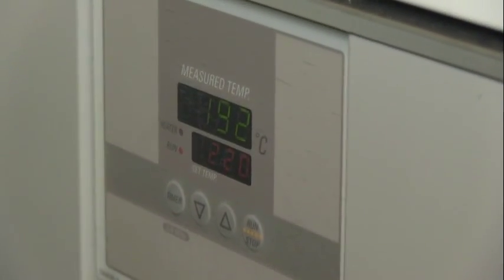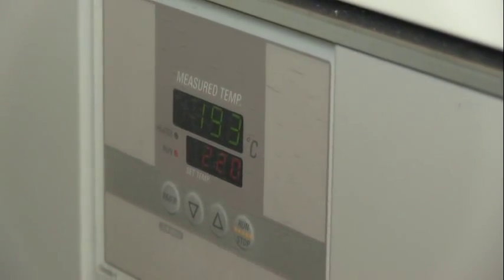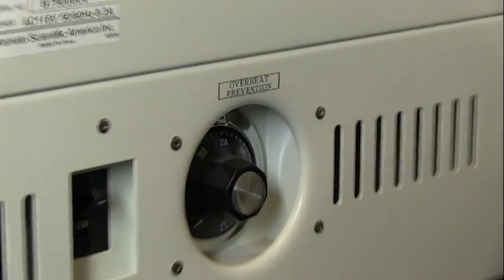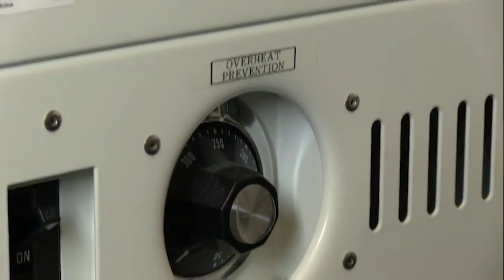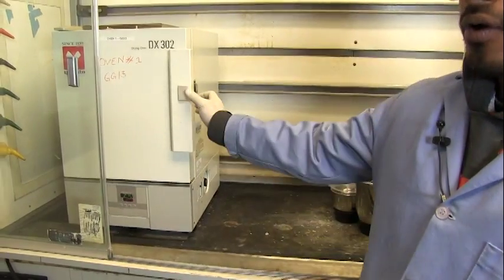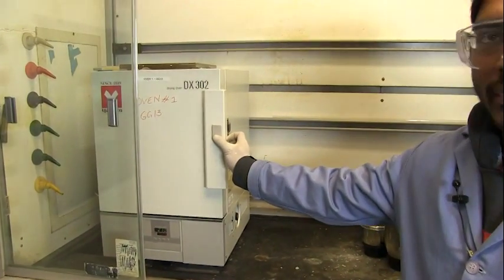Defective temperature controls or operator inattention can be the cause of dangerous overheating in an oven. In order to prevent dangerous overheating, the best practice is to use this high temperature limit controller. In addition to that, you should regularly check your heating devices during a reaction.